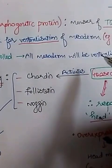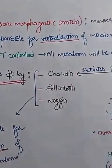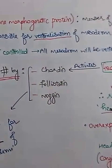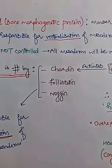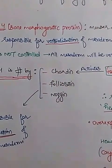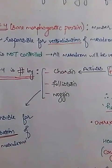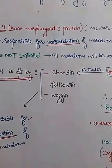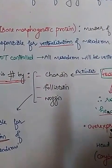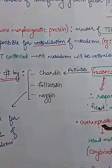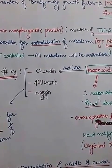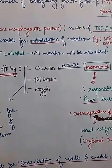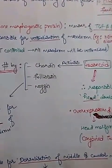BMP4 gene is responsible for ventralization of mesoderm. The mesoderm keeps invaginating on the ventral side of ectoderm, and if this is not controlled, all mesodermal cells will be ventralized. Mesoderm has further parts — paraxial, lateral plate, and intermediate mesoderm — and if all of it is ventralized, it will not be properly regulated.